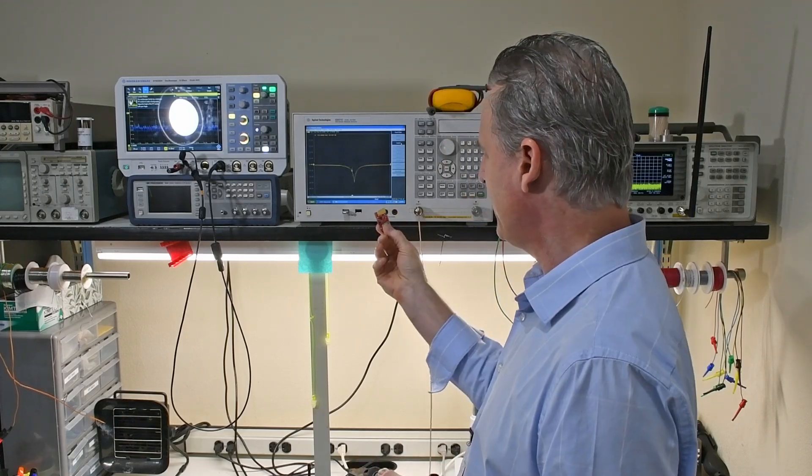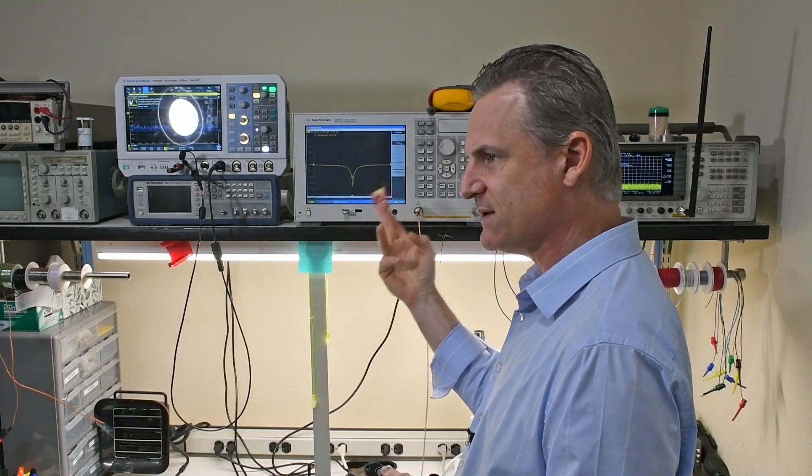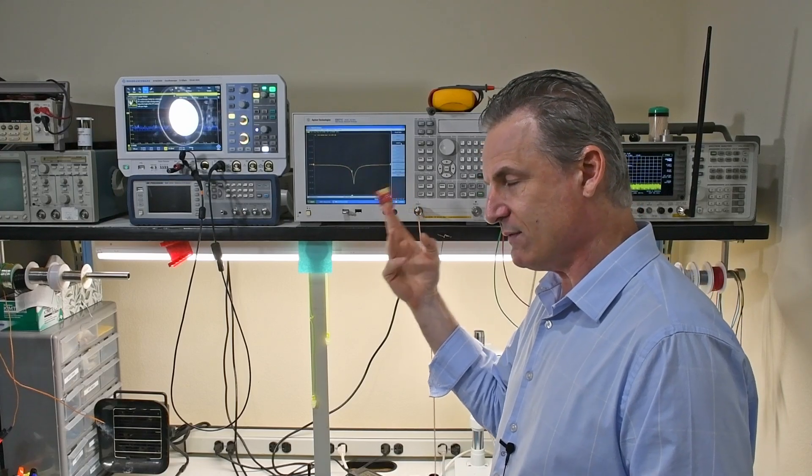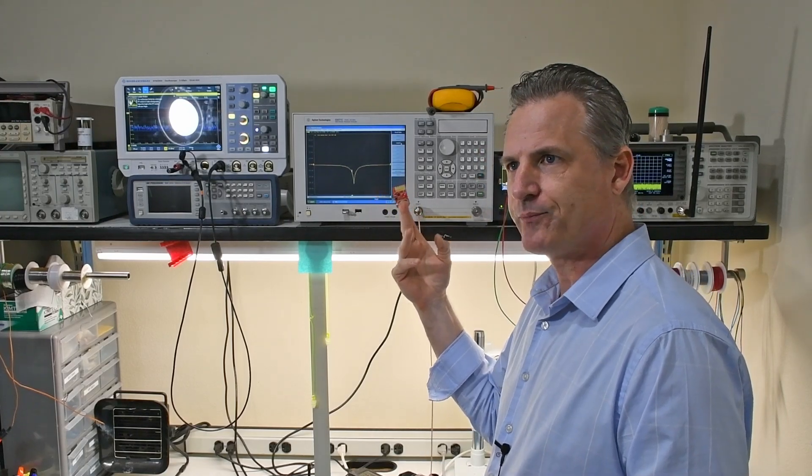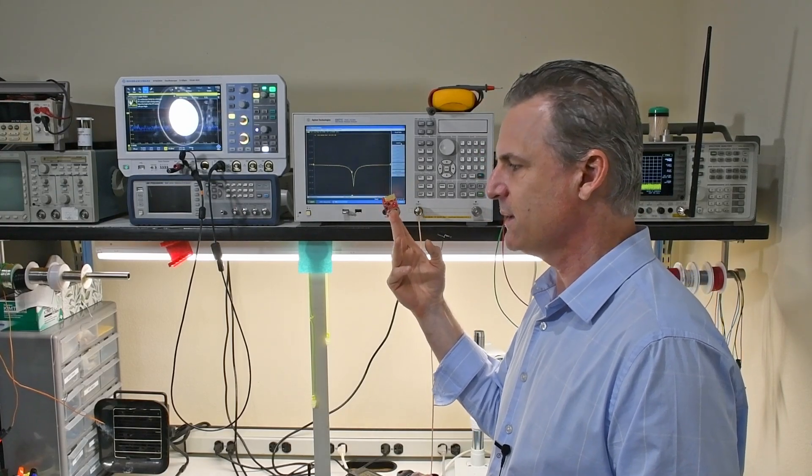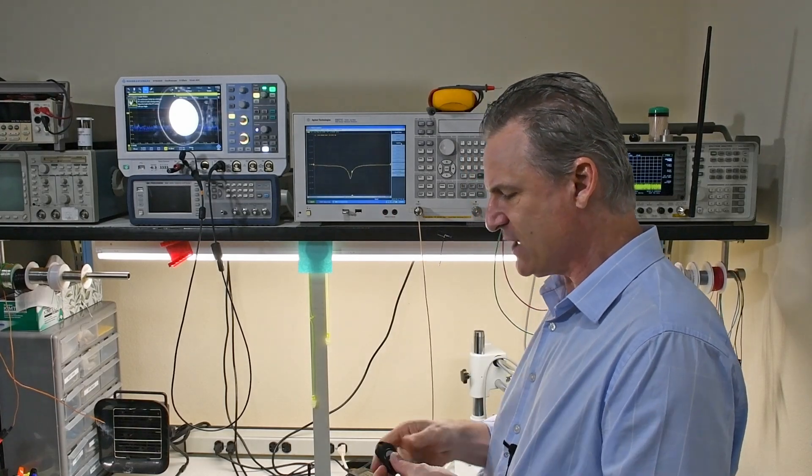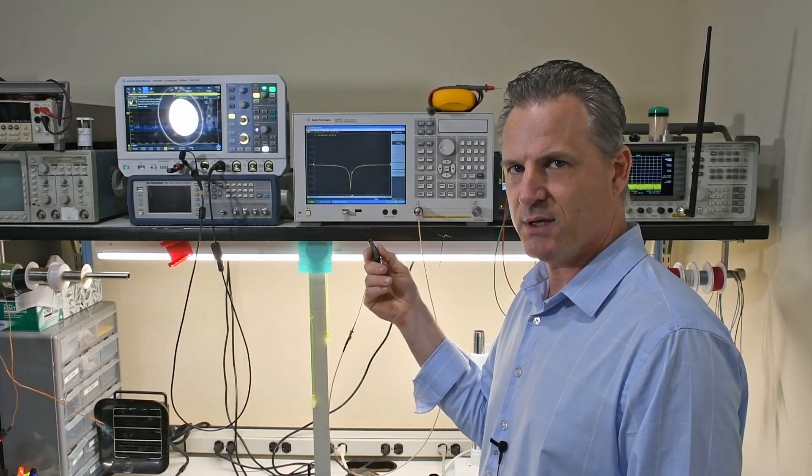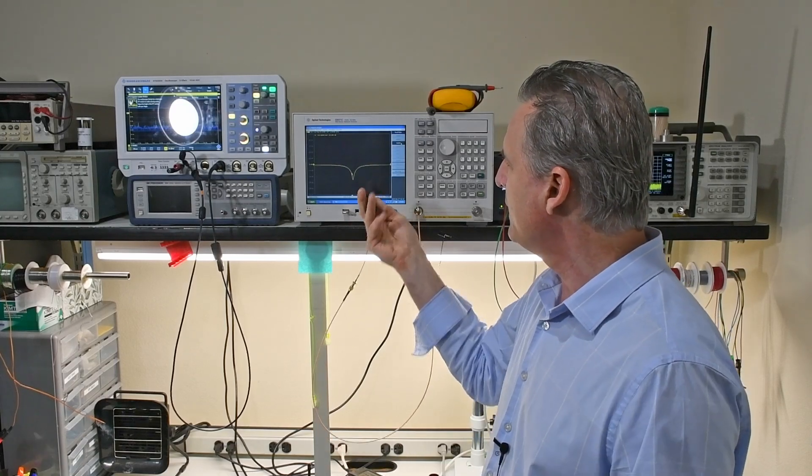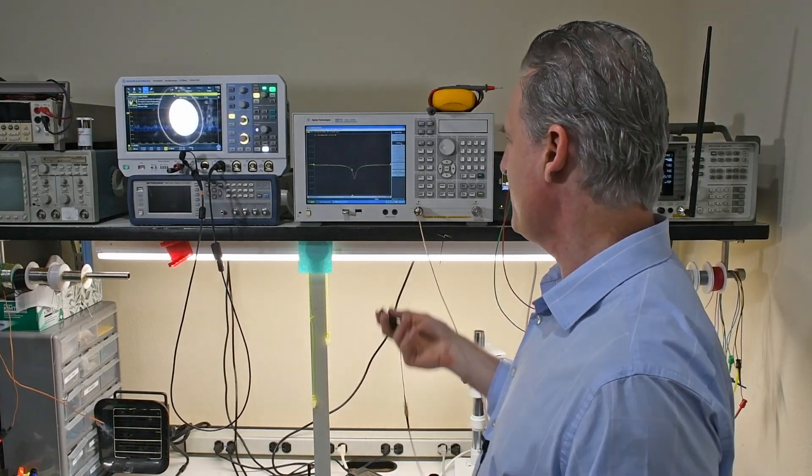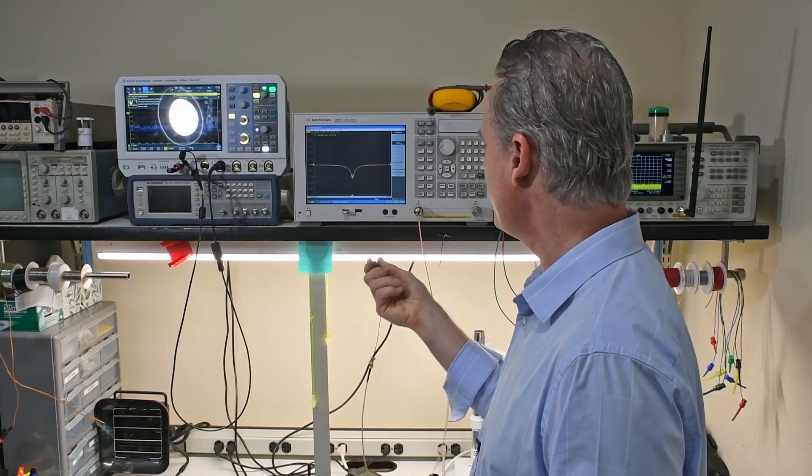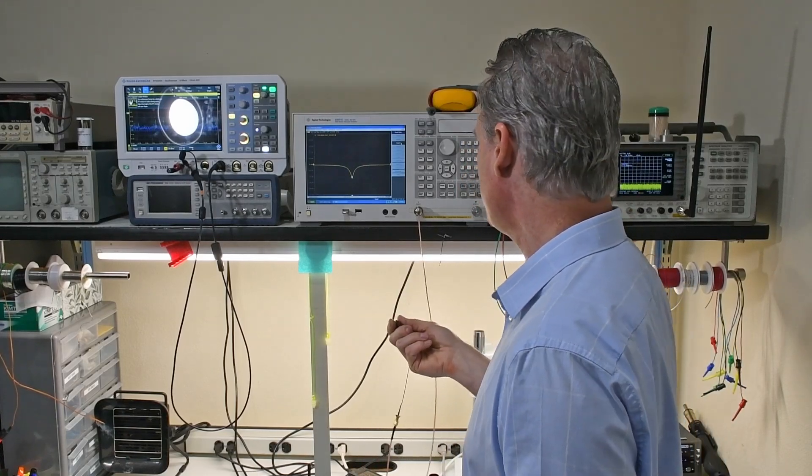The values, the original values here outside the fob was a 72 nanohenry inductor, 15 picofarad capacitor. That changed to a 56 nanohenry inductor and a 13 picofarad capacitor. And there you go. That's all it took was putting it inside the fob case and matching it.